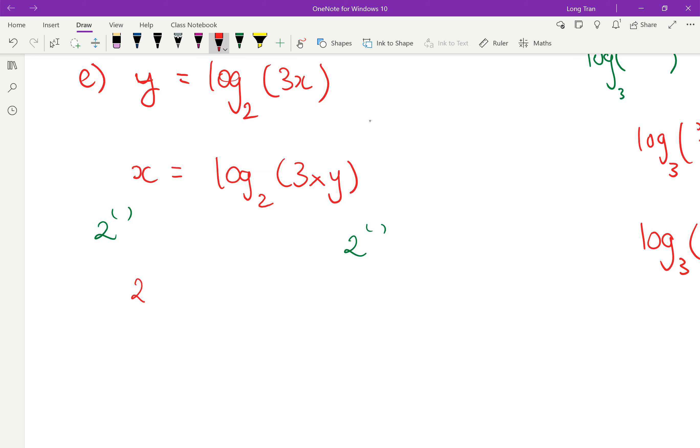That gives me 2 to the power of x equals 2 to the power of log base 2 of 3y. And we know that these two are inverses of one another, 2 to the power of log base 2.